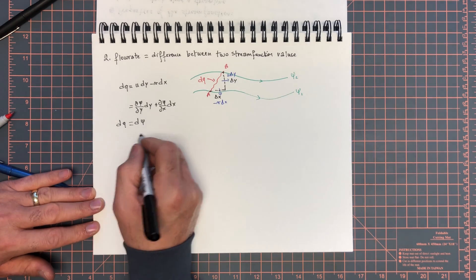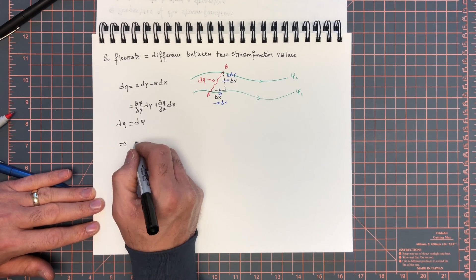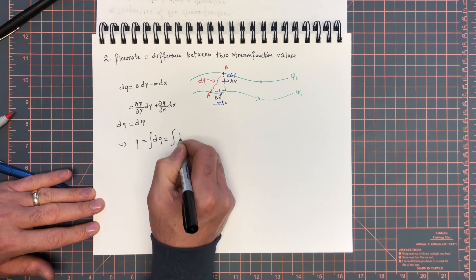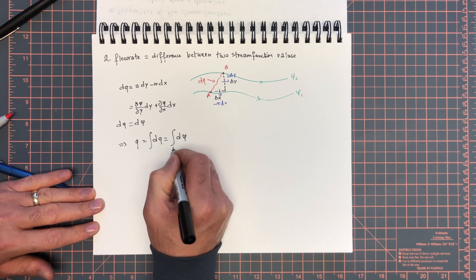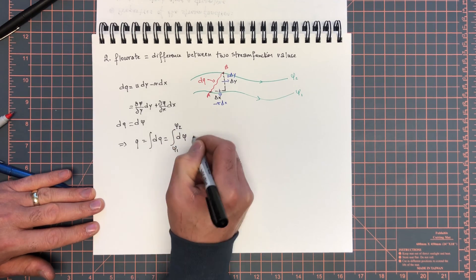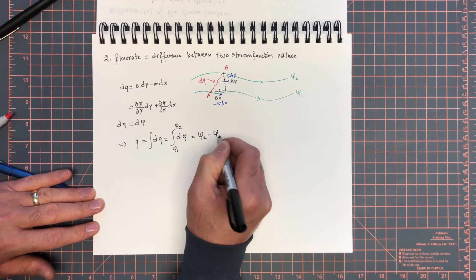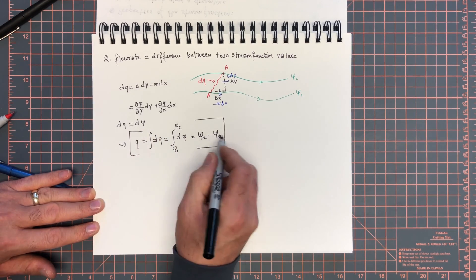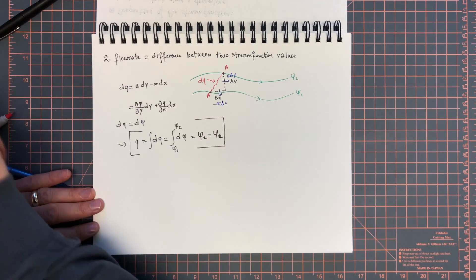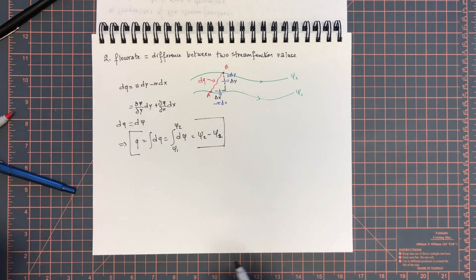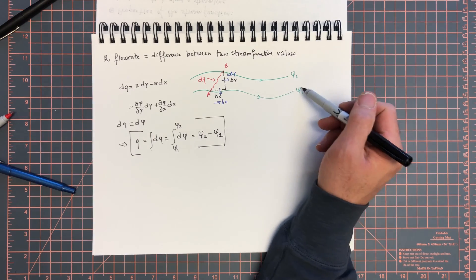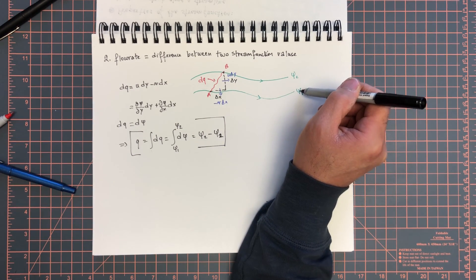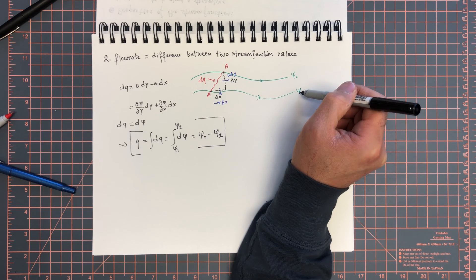Therefore the flow rate between any streamlines q, which equals integral dq, equals the integral of dψ between ψ1 and ψ2, and that's simply the difference ψ2 minus ψ1. The sign of this difference tells you whether the flow is going from left to right or right to left, but what's important is the difference between the values of two streamlines rather than their absolute values. This could be just up to an additive constant, but that constant will subtract out once you take the difference.